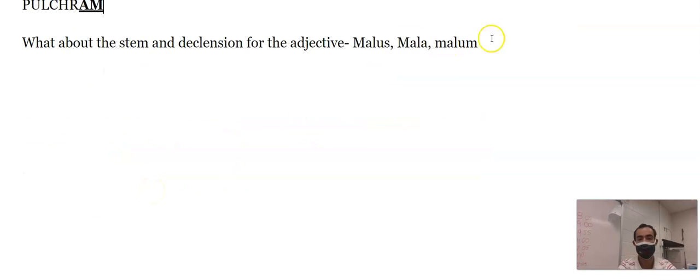Malus is the word for bad. Malus has an a, so this is a one and two, just like pulcher. So I take off the a and I get mal. And then if I wanted to use anything, I use first declension, second declension, third declension. I do not use third declension if it's not a third declension noun.